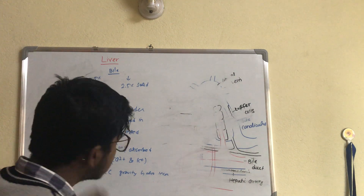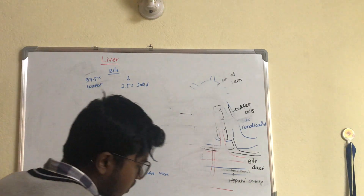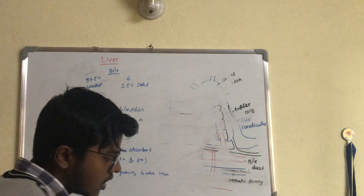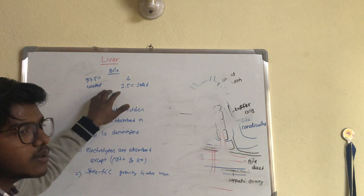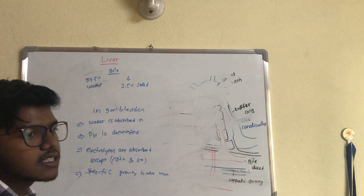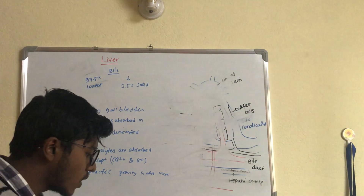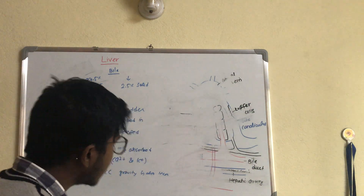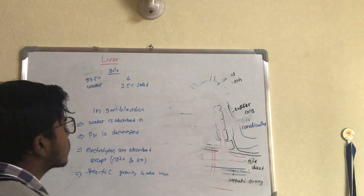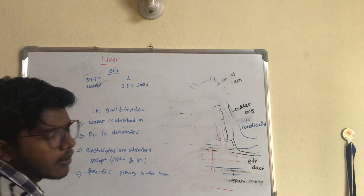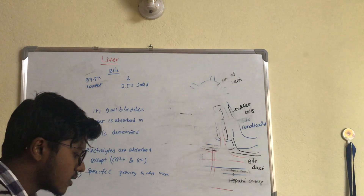Coming on to the full composition of bile solids: organic substances include bile salts, bile pigments, lecithin, cholesterol, and mucin. Inorganic substances include electrolytes such as sodium, chloride, bicarbonate, and potassium.